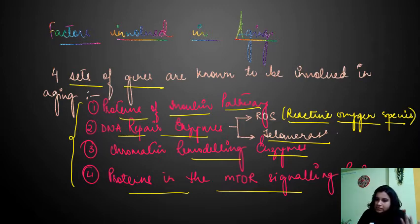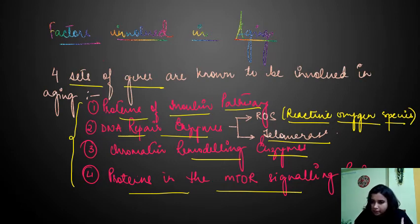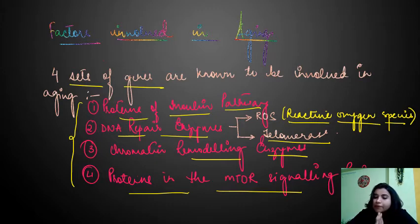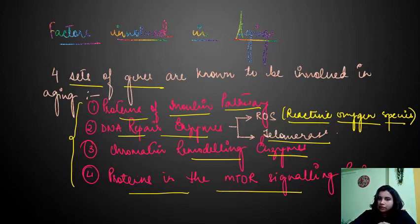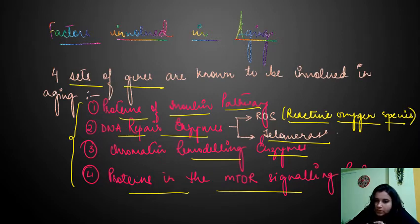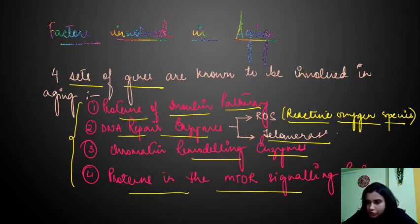These four factors — proteins of the insulin pathway, DNA repair enzymes, proteins in the mTOR signaling, and chromatin remodeling enzymes — play a very important role in aging. If they undergo certain changes or mutations, this leads to the aging process.